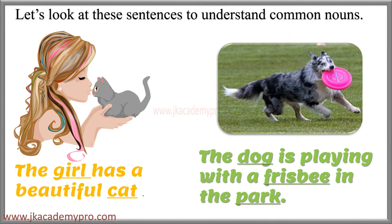Let's look at these sentences to understand common nouns. 'The girl has a beautiful cat.' Here, girl and cat are common nouns — girl could mean any girl, cat could mean any cat. Second example: 'The dog is playing with a frisbee in the park.' Here, dog, frisbee, and park are common nouns. Dog is an ordinary name for an animal, frisbee is an ordinary name for a thing, and park could be any park.